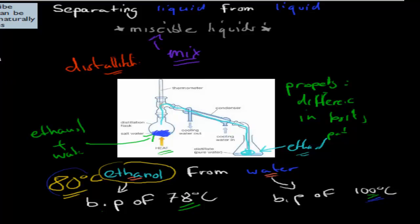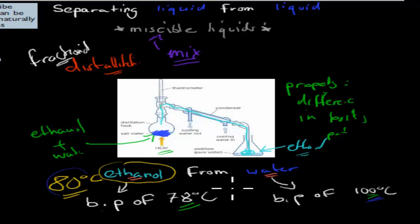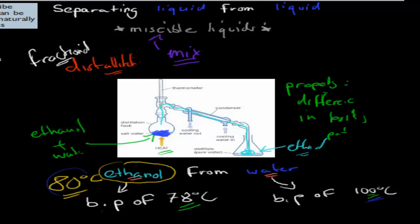I will talk about fractional distillation, not in this video but in a future video. Fractional distillation is used when the boiling points are a lot closer together — for example, if you're trying to separate something with a boiling point of 100°C from something with 97°C, it becomes a lot harder to use simple distillation, so we use fractional distillation instead.